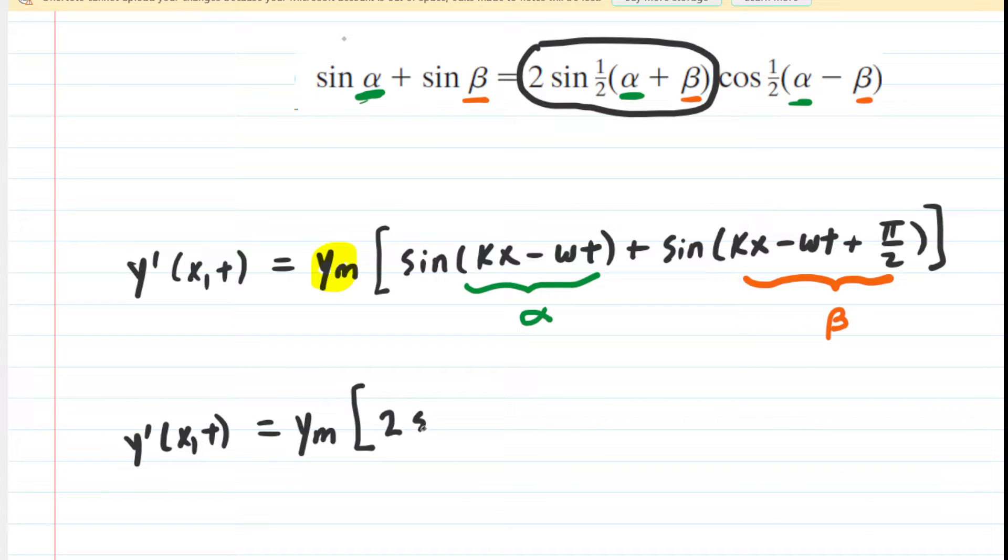We would have 2 sin of 1/2 and then a parentheses. Then we're going to add the α, which was kx - ωt. And then we're going to add that to the β, which is kx - ωt + π/2. Of course, in a moment, we're going to simplify that.